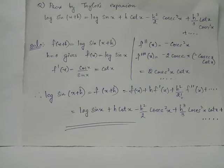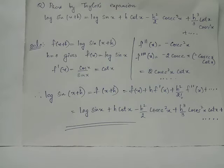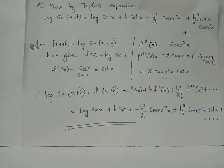We can now write the Taylor series expansion: log sin(x + h) equals f(x + h), given by f(x) plus h times f'(x) plus h squared by 2 factorial times f''(x) plus h cubed by 3 factorial times f'''(x) plus etc.